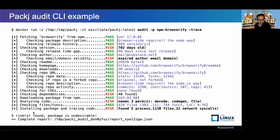Finally, it installs the package and traces the code. It found five processes, one socket, three file descriptors, zero additional files, and 22 network system calls — meaning it accesses the file system, performs network operations, and spawns processes. If these are risks to you, you can take a deeper look.